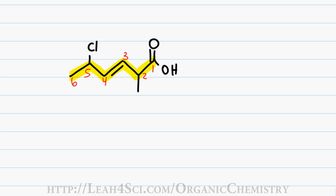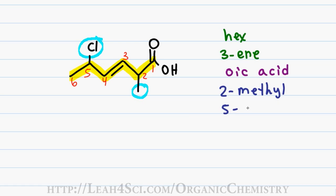A total of six carbons gives me a first name of hex. The pi bond at number three gives me a last name of 3-ene. My carboxyl functional group gives me the ending oic acid, where the number one is understood and therefore omitted. A one carbon substituent on carbon 2 gives me the prefix of 2-methyl, and a Cl substituent on carbon 5 gives me the prefix 5-chloro.